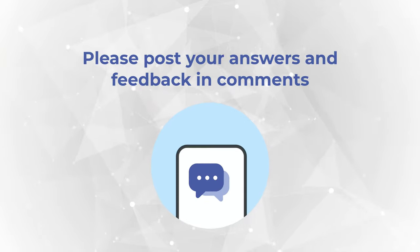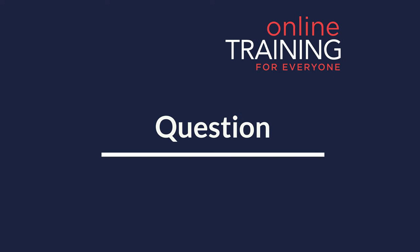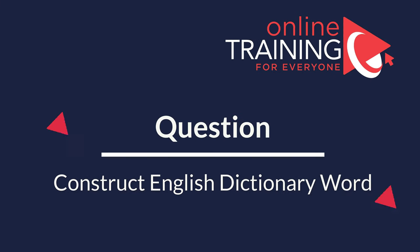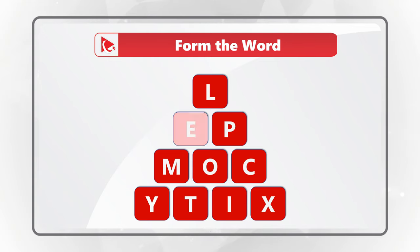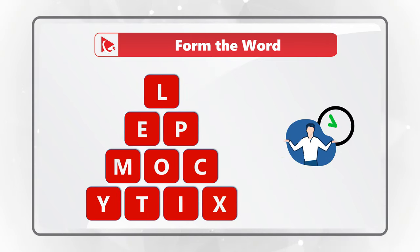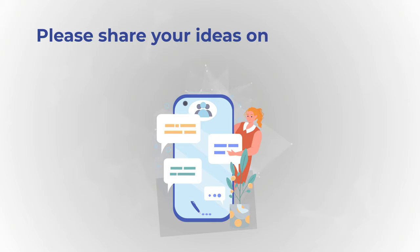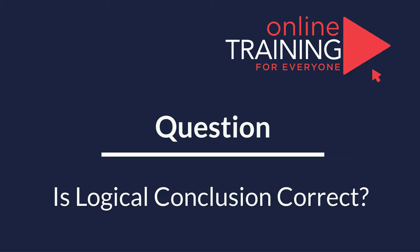Here's a question for you to practice. You're presented with 10 letters and need to form a word from the English dictionary using all the letters only once. The letters are L, E, P, M, O, C, Y, T, I, X. Hint: the word somehow represents the fact that there are 10 letters. Post your answer in comments!